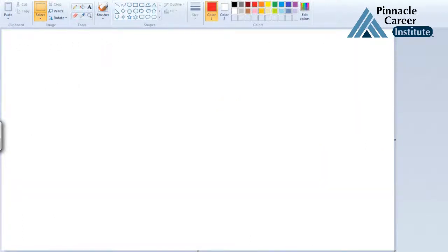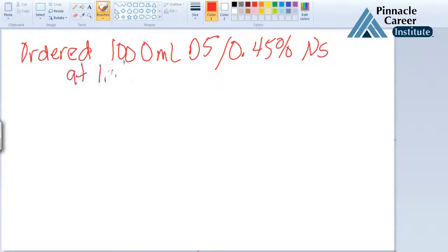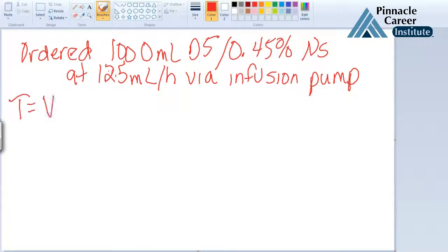Now let's look at total time to infuse. We have ordered 1,000 milliliters. We're looking at total time to infuse. Before we used flow equals volume divided by time—we're using the same formula. We're just solving for a different variable. So we're going to have time equals volume divided by flow.